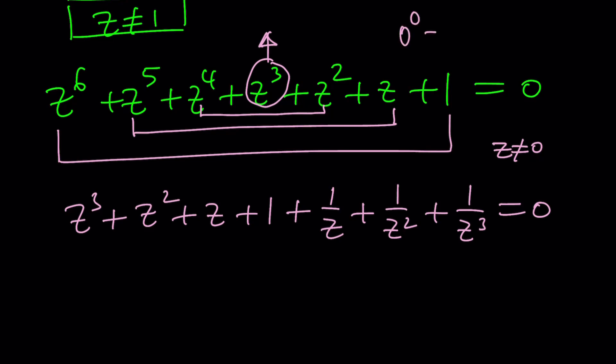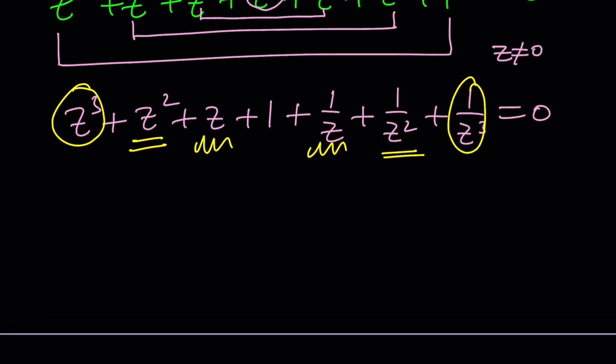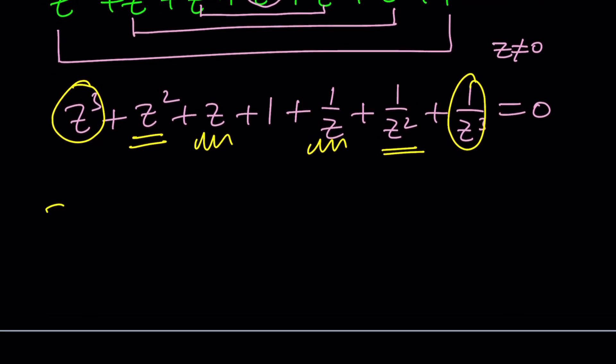0 to the power of 0 might equal 1, but 1 does not equal 0 for sure. I made a video about this. So now, here's what we're going to do. We spoke about symmetry. I'm going to take this and pair up with that. 1 is going to be left alone because 1 is a constant.